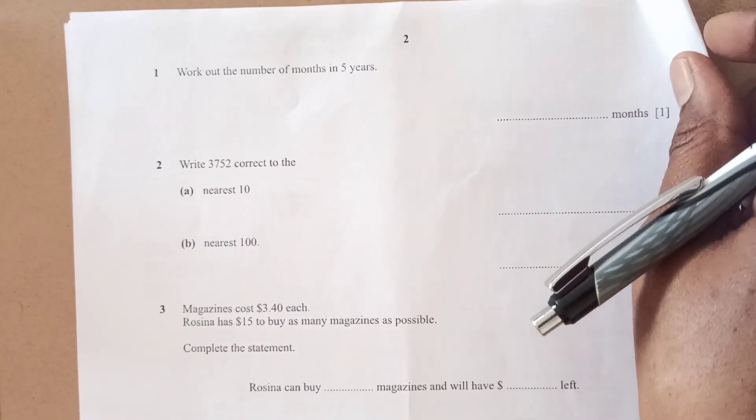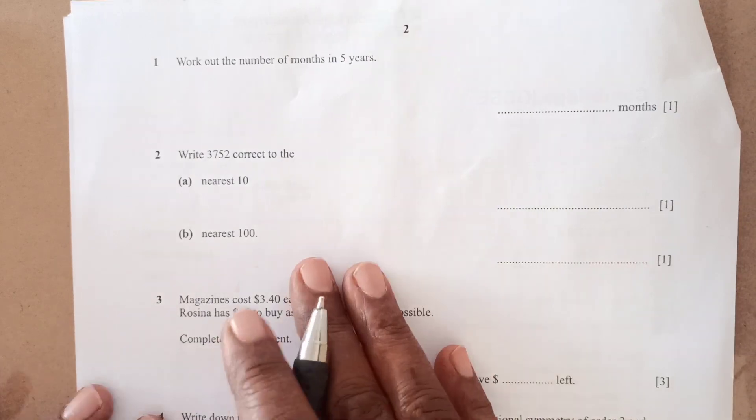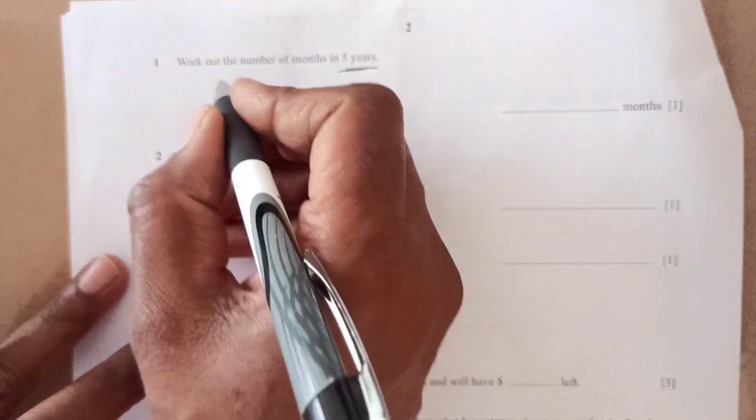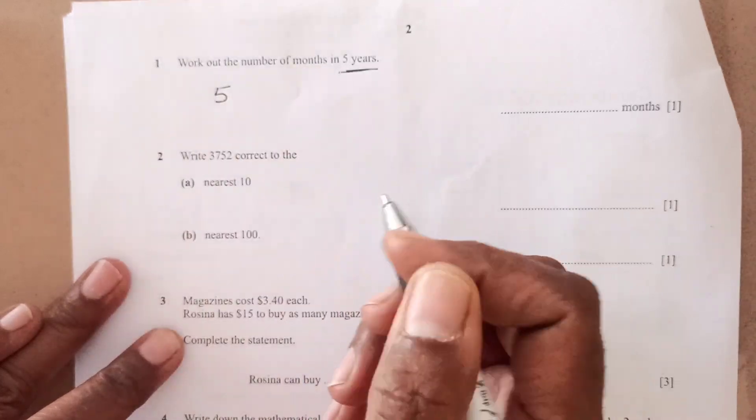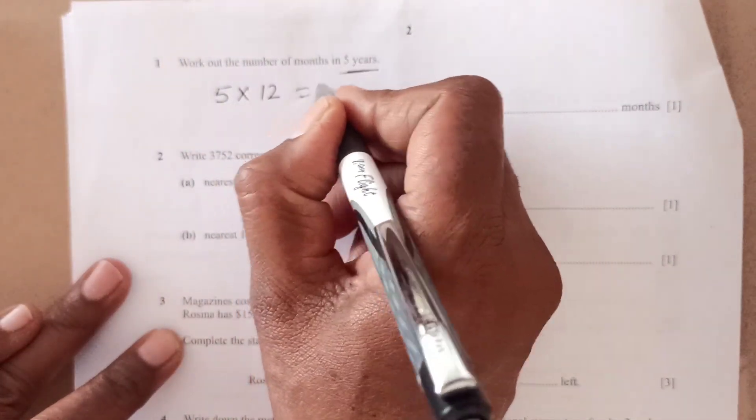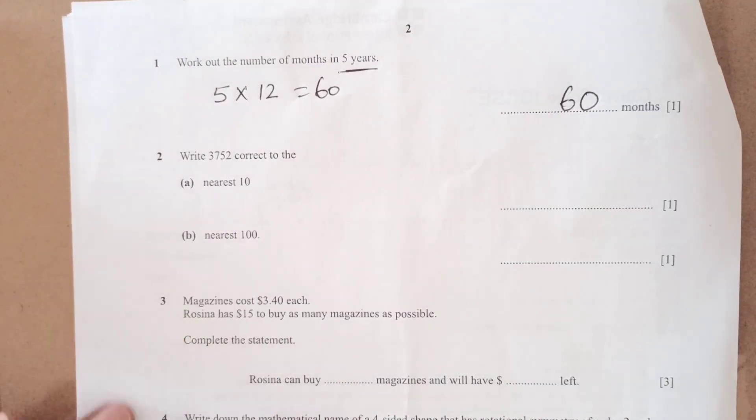The first question that I can see here is work out the number of months in 5 years. It is very simple, in 1 year there are 12 months. So in 5 years it will be 12 times 5 which is 60. It is going to be 60 months, right.